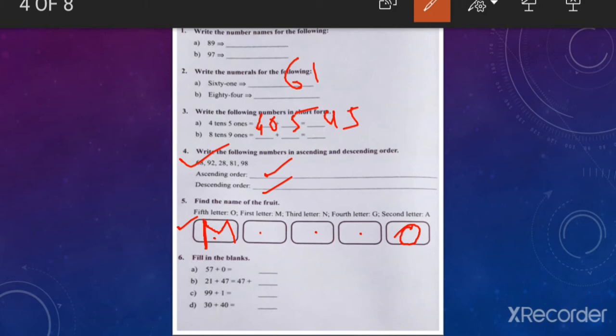Number six, fill in the blanks. Fifty-seven plus zero. You know adding zero means adding nothing, so it is fifty-seven. In this way, solve the remaining sums by yourself.